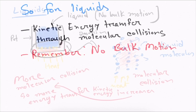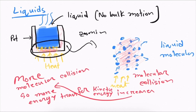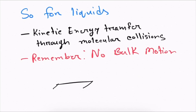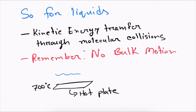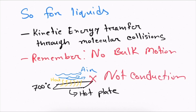We must remember that there cannot be any bulk motion. If the liquid starts to boil, that is actually heat convection, not heat conduction. For example, imagine you have a hot plate at 700 degrees Celsius and you are flowing cold air at 20 degrees Celsius over it. The plate is going to transfer some heat energy to the air — that is not heat conduction, it is heat convection, which is a different mechanism.